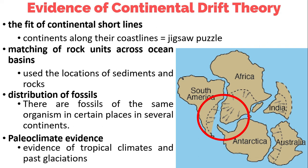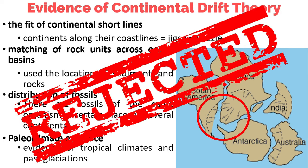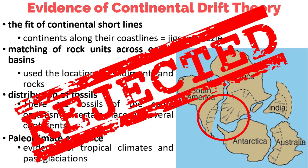Lastly, we have the paleoclimate evidence — evidence of tropical climates and past glaciation. However, many scientists rejected Wegener's continental drift theory, simply because Wegener could not conceive of an acceptable mechanism for moving the continents around. There was no mechanism of action, no force identified. Remember, though, that these arguments for continental drift theory can also be evidence to support seafloor spreading.